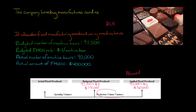Our production volume variance is going to be $30,000, and it's unfavorable. The trick is: the budgeted amount of machine hours was 97,500, but we undershot that — we only had 90,000. When your actual activity level of 90,000 is lower than the budgeted activity level of 97,500, the production volume variance is unfavorable.